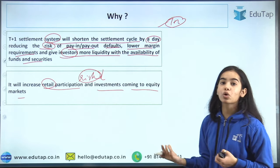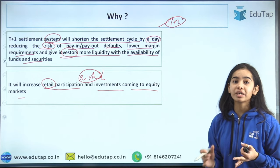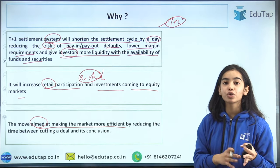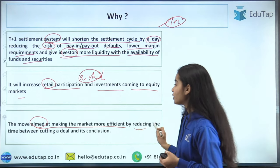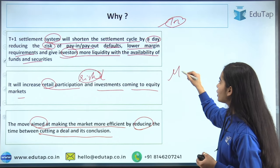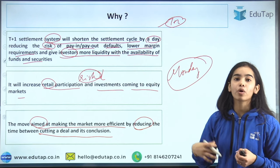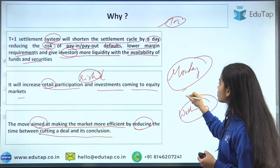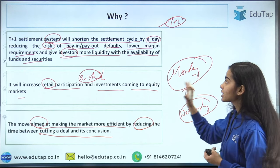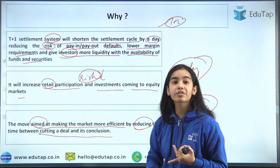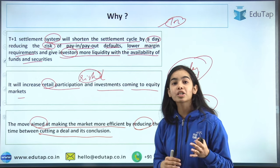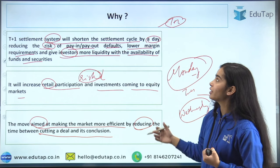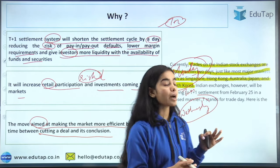Because within one day you are getting your money or your shares, investments in equity markets will increase as there is more liquidity. The move aims at making the market more efficient, reducing the time between cutting a deal and its conclusion. If you place your order on Monday, within 24 hours you will get your shares or money — you do not have to wait till Wednesday. Risk will be reduced, more liquidity will be in the market, and margin requirements will be lower.